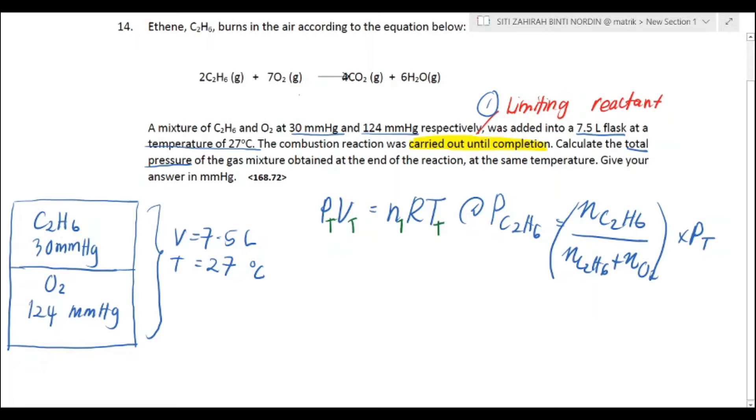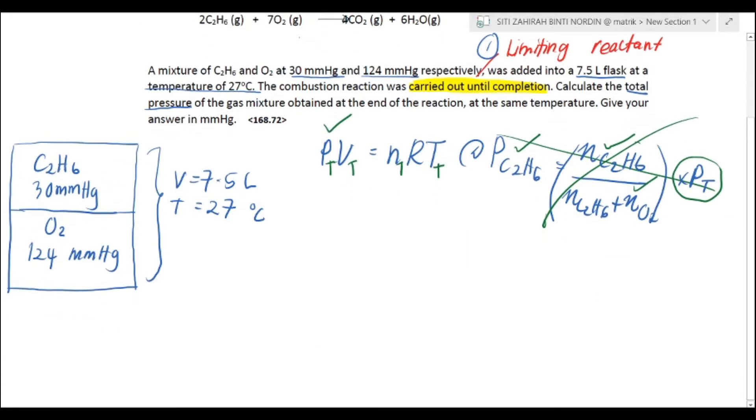If we want to find the total pressure, then volume already must be total. Your mol must be total and your temperature must be total as well. If you want to use this formula to find your pressure total, then it would involve a lot of work. You've got to find moles for both reactants, which would be difficult because we don't have the mass. Cancel off this formula. We're going to use this one, the ideal gas equation.